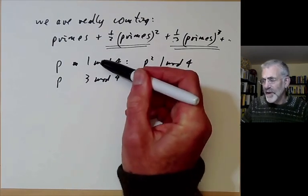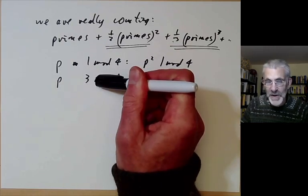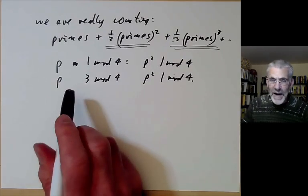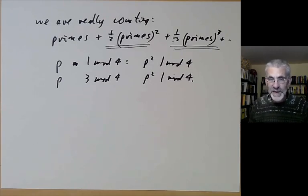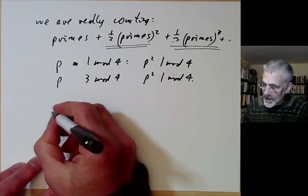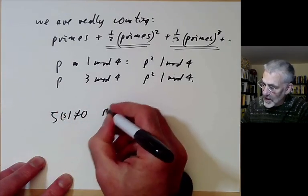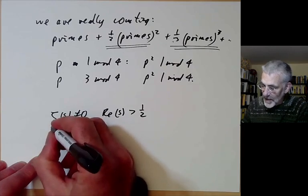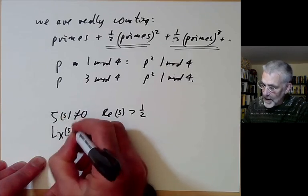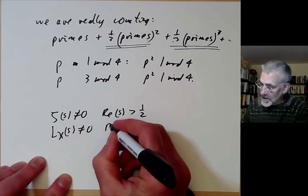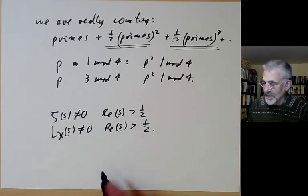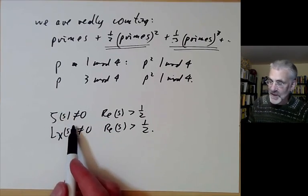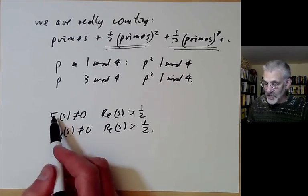Moreover, anything you can prove for the Riemann zeta function has an analogue for Dirichlet L-series. The Riemann hypothesis says ζ(s) is non-zero for Re(s) > 1/2, which is the most notorious open problem in number theory. The analogue for Dirichlet L-series says these are also non-zero for Re(s) > 1/2. If anyone found a proof of the Riemann hypothesis, everybody expects it would generalise rather easily to these Dirichlet L-series, because everything true for the Riemann zeta function has an analogue here.